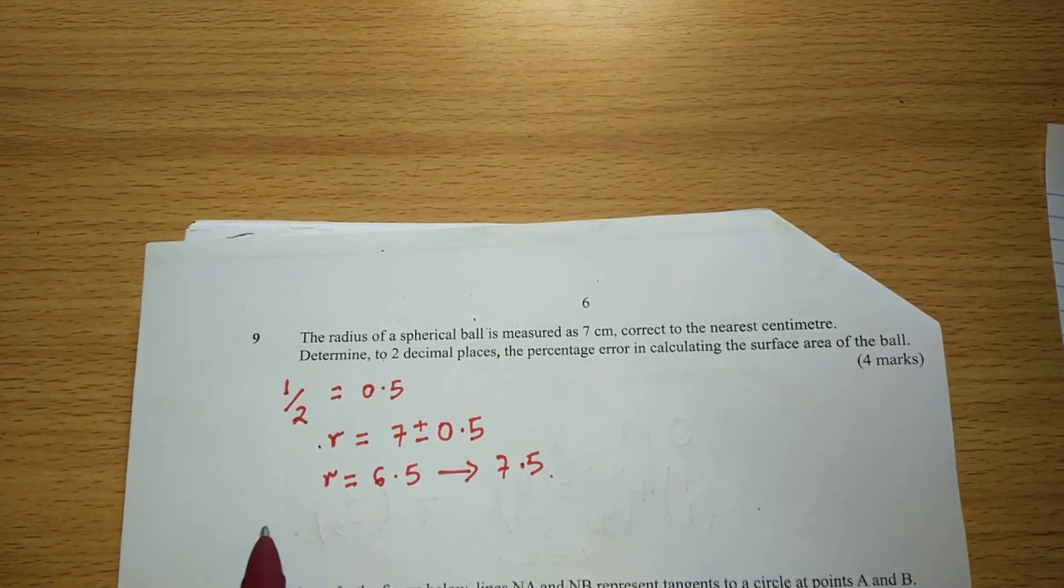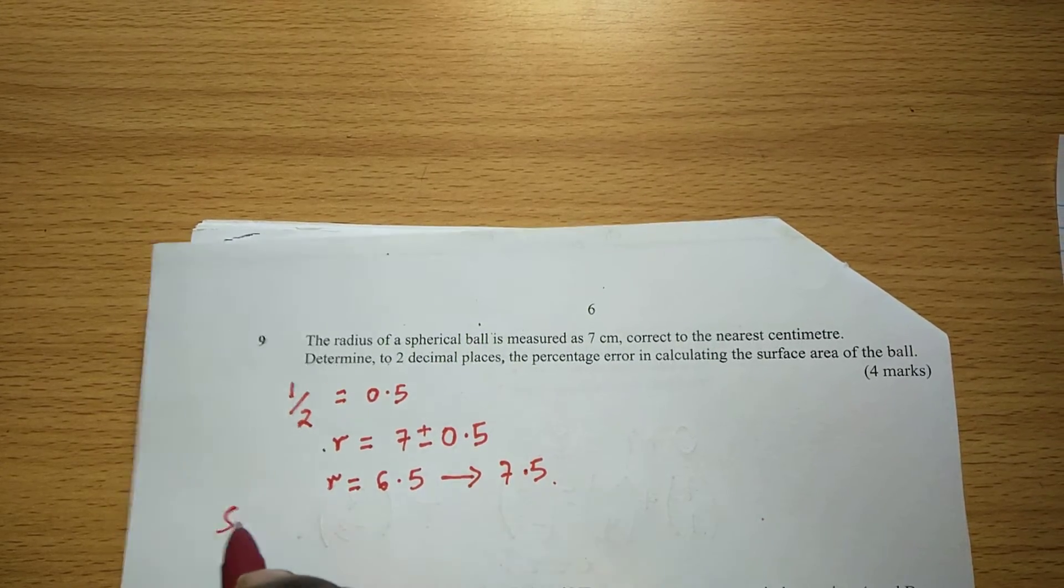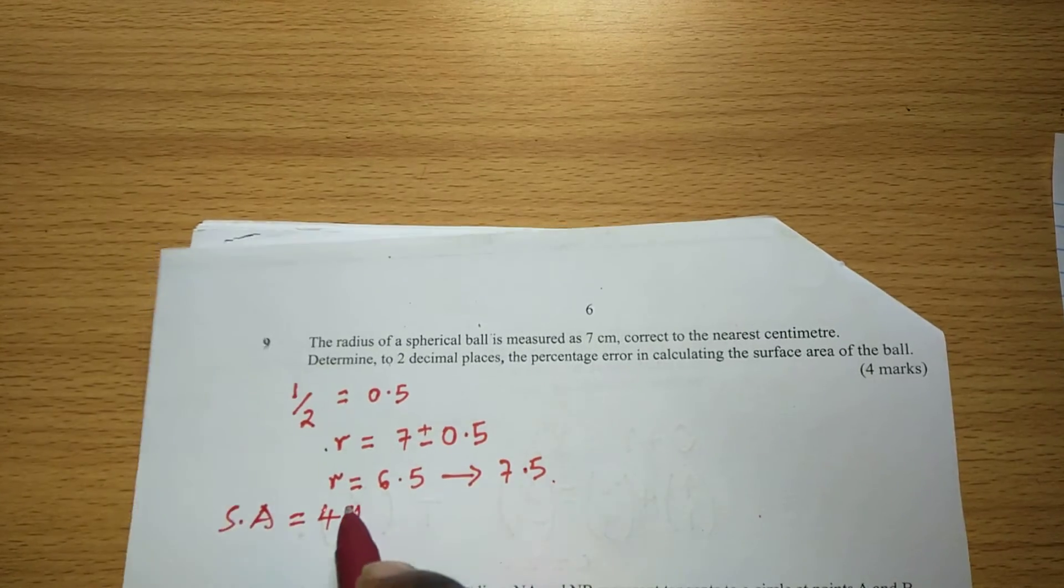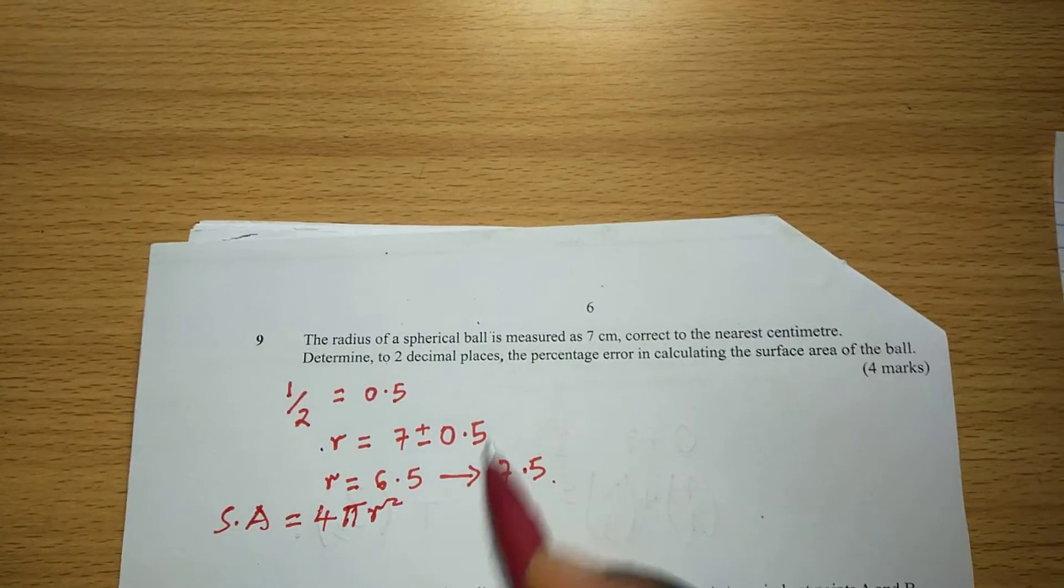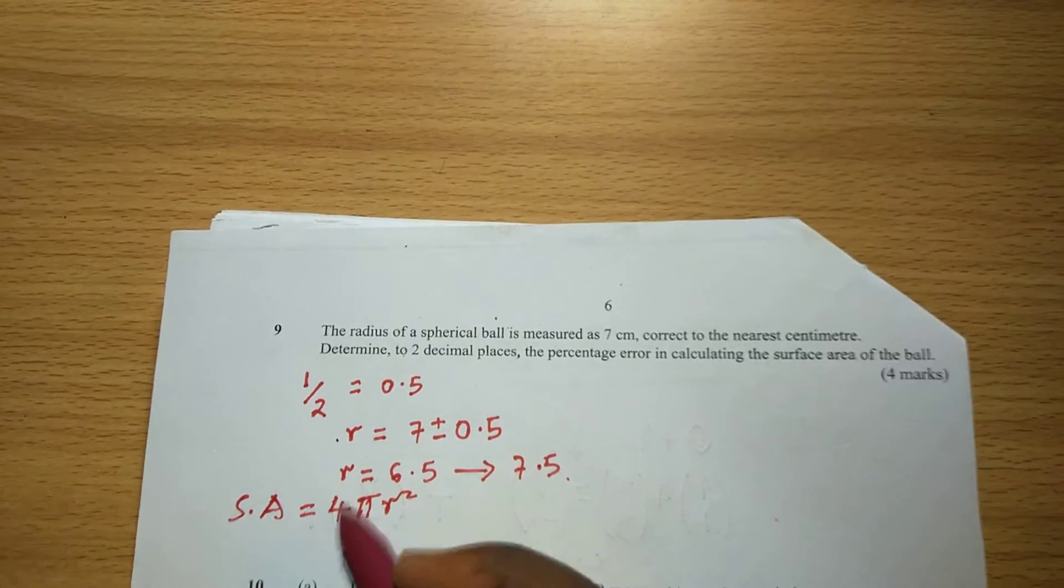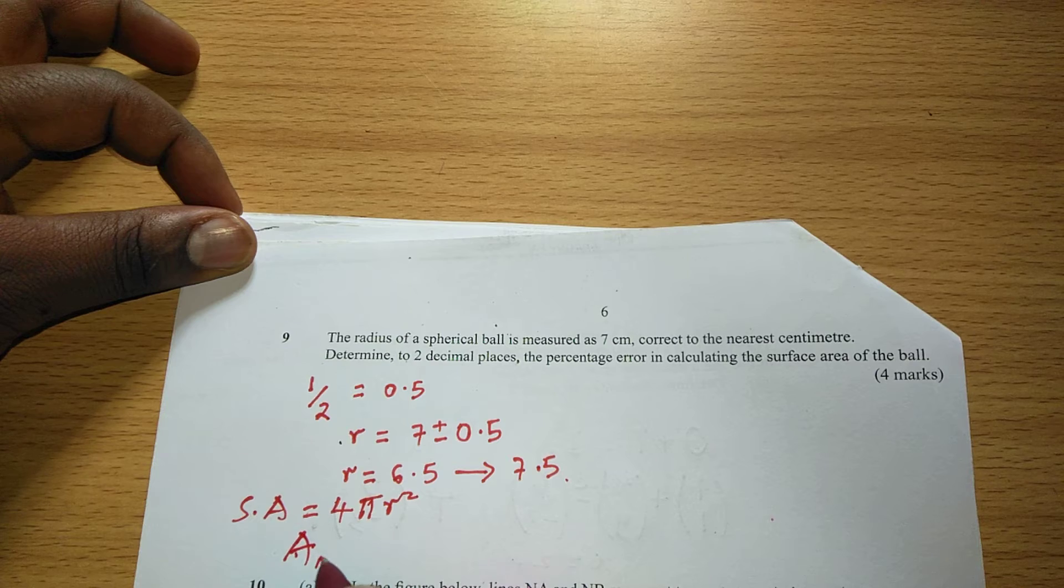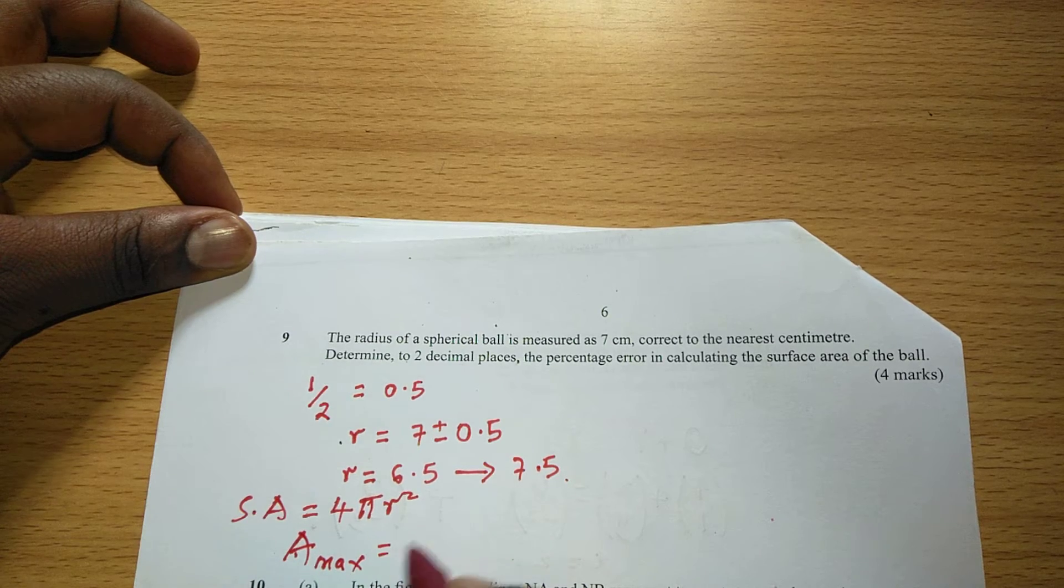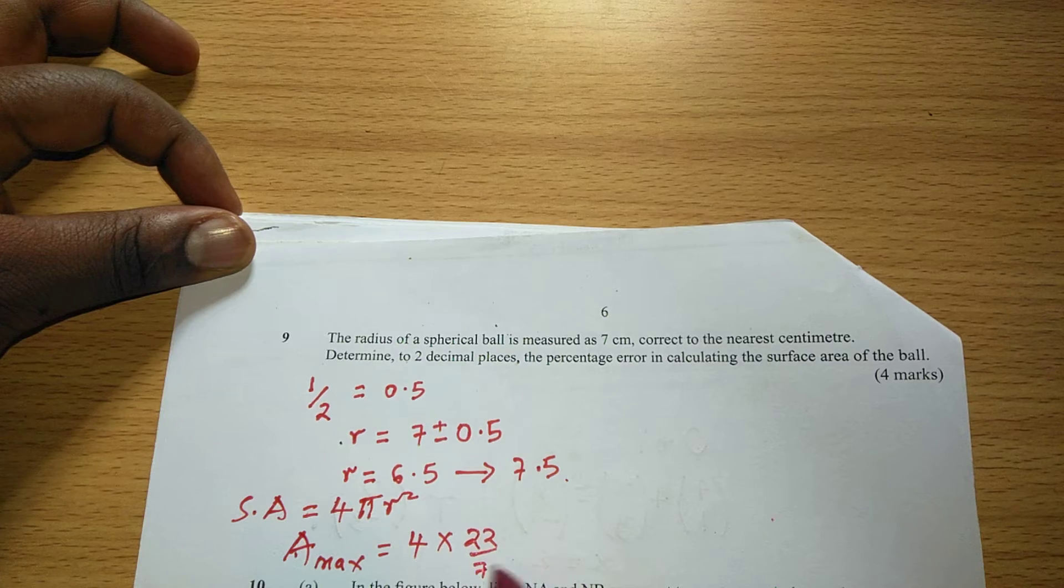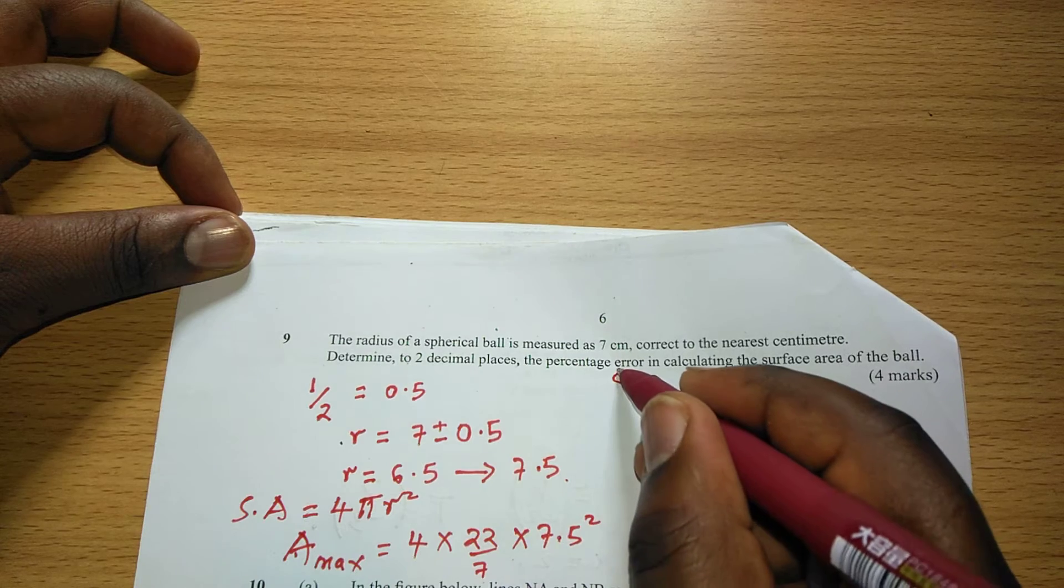Therefore here we're going now to apply the formula for calculating surface area of a sphere which is 4πr². Therefore we first of all get maximum area, A_max, by using 4 times π then times the maximum r squared.